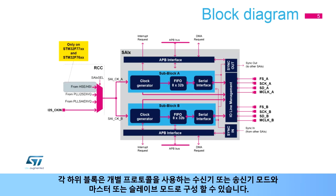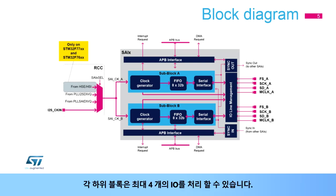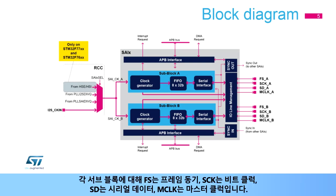Each sub-block can be configured in receiver or transmitter mode and in master or slave mode with its own protocol. Internal and external synchronization allows two sub-blocks to be synchronized, or two SAI interfaces to be synchronized. Each sub-block can handle up to four IOs. For each sub-block, FS is the frame synchronization, SCK is the bit clock, SD is the serial data, and MCLK is the master clock.